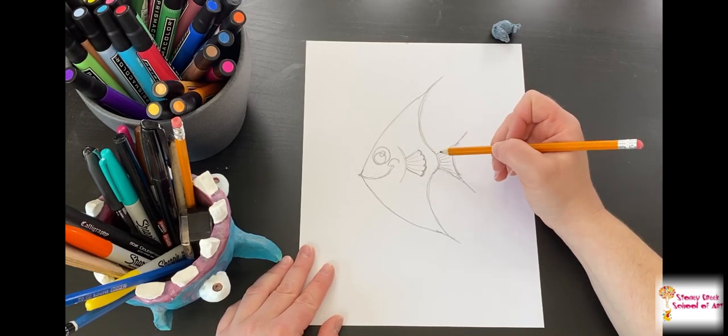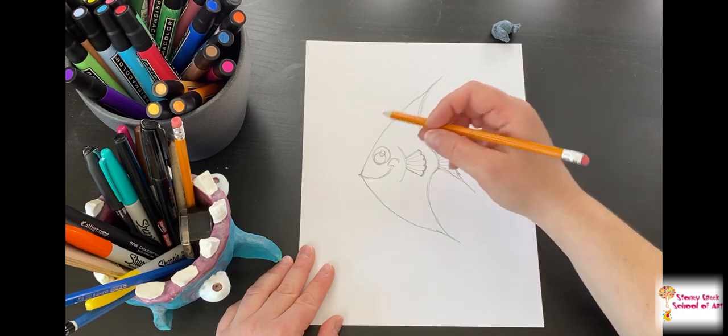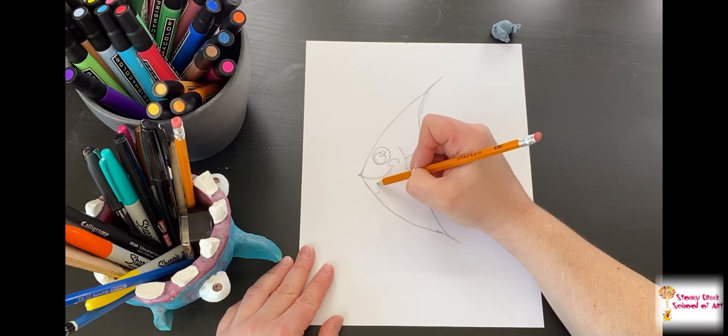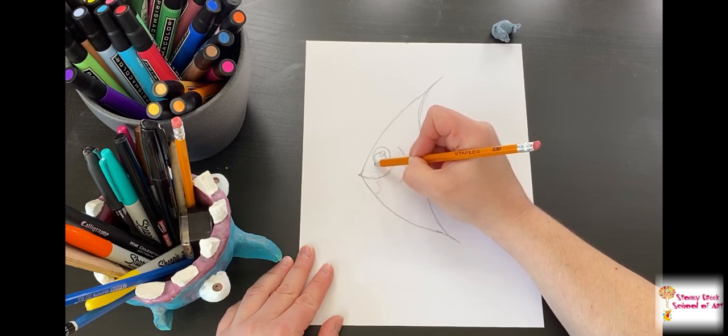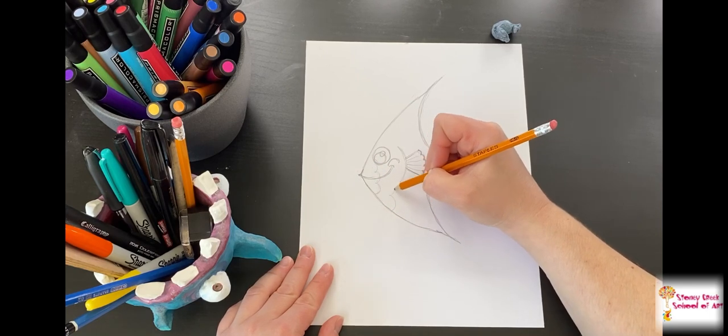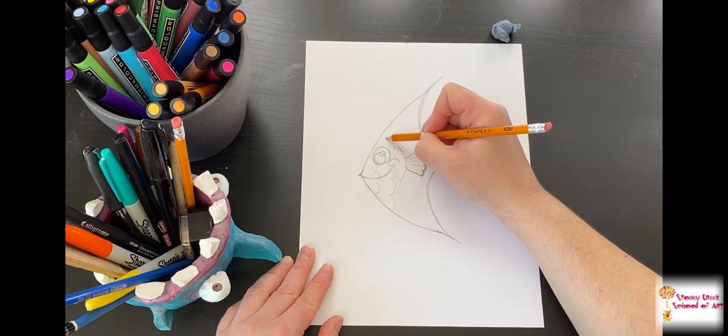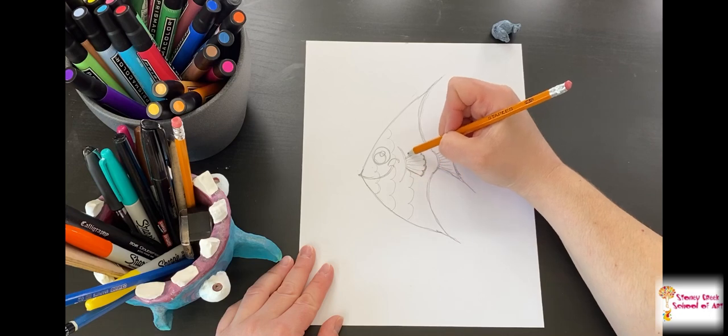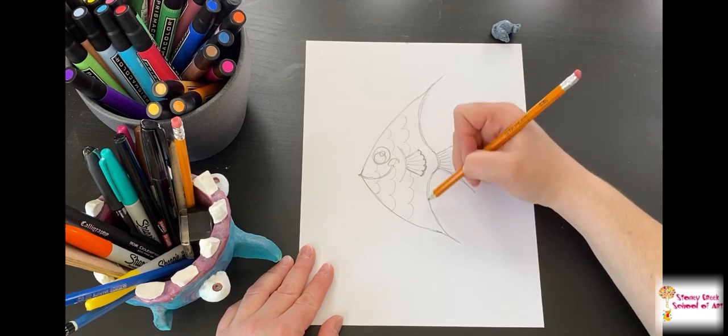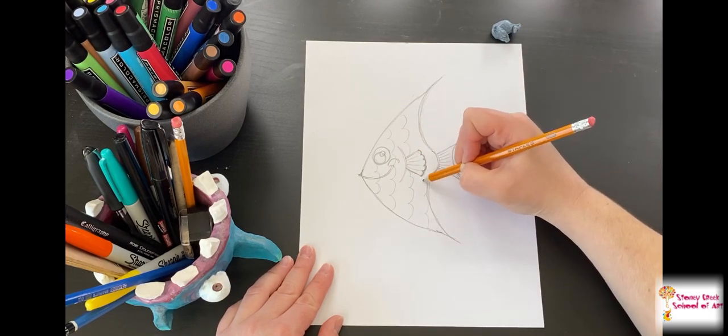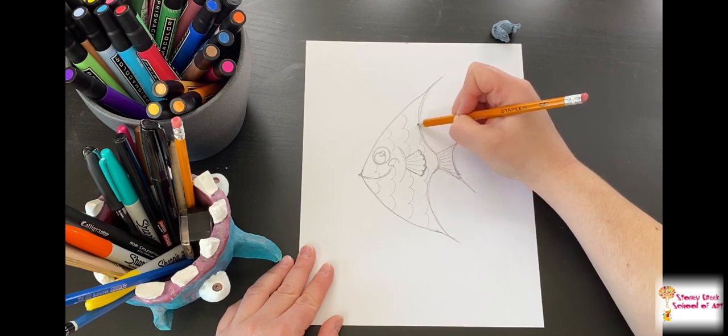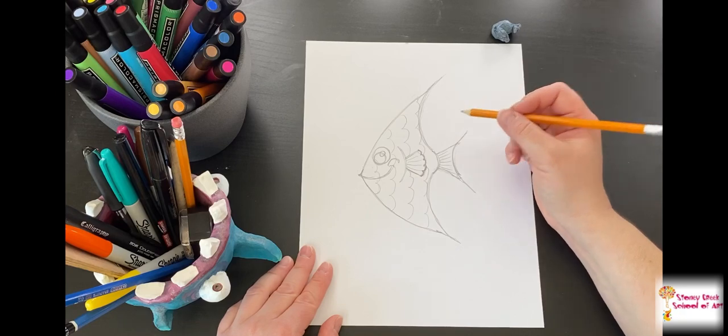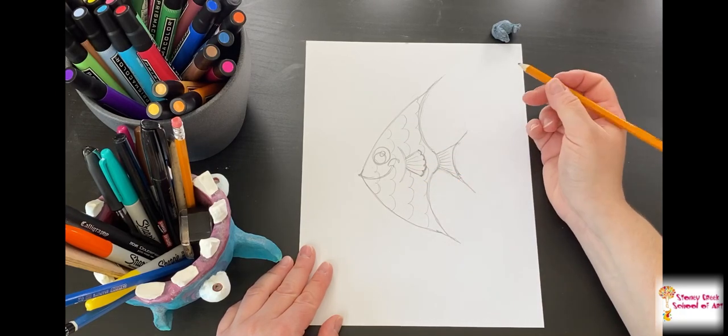But I was thinking about making mine a rainbow fish. I'm going to do soft curves like this—these are the scales. In each section, I can make them a different color, so he'll be rainbow striped.